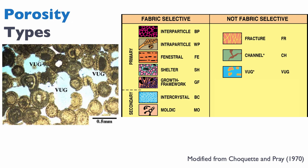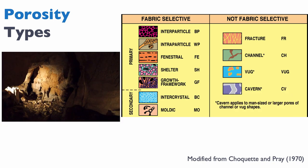Vugs are an important type of porosity. Like moldic porosity, a vug is a dissolution feature, but the difference is that a vug cross-cuts the fabric of the rock. Here you can see the vug is cross-cutting the ooids rather than following their pattern — that's an important distinction. Finally, cavern porosity designates a man-size or larger porosity of a channel or vug shape — a very large dissolution feature.